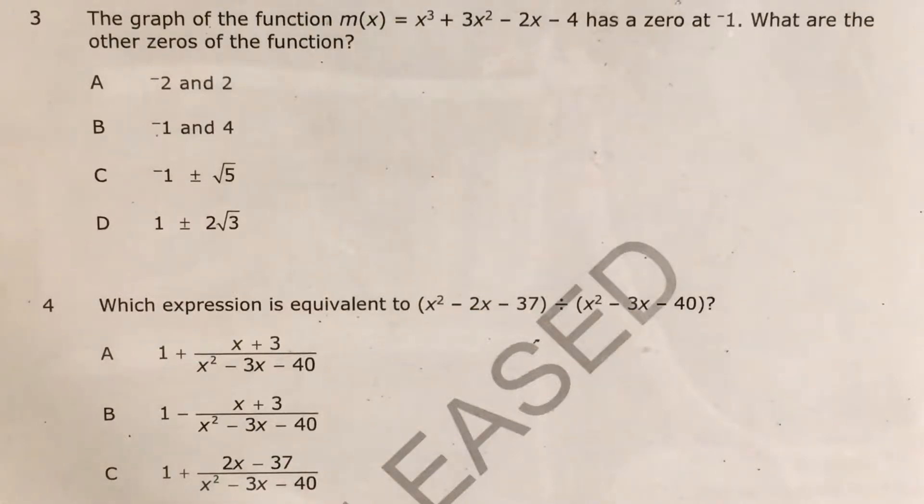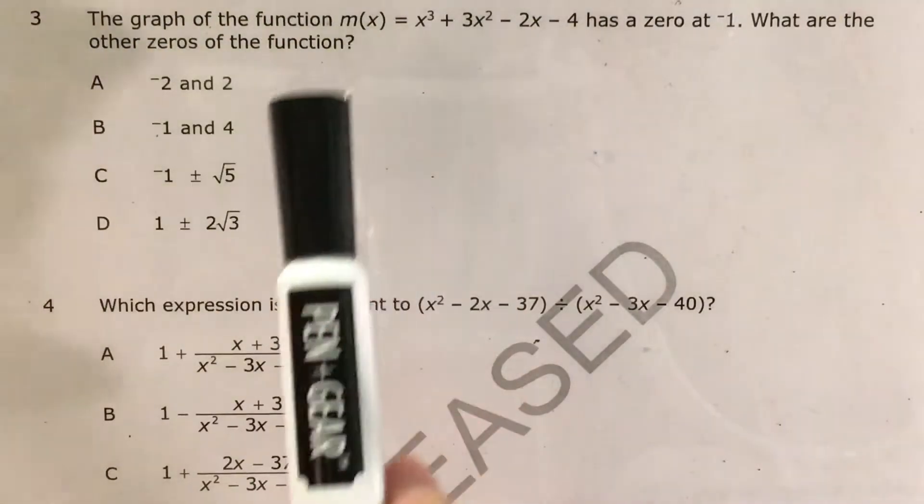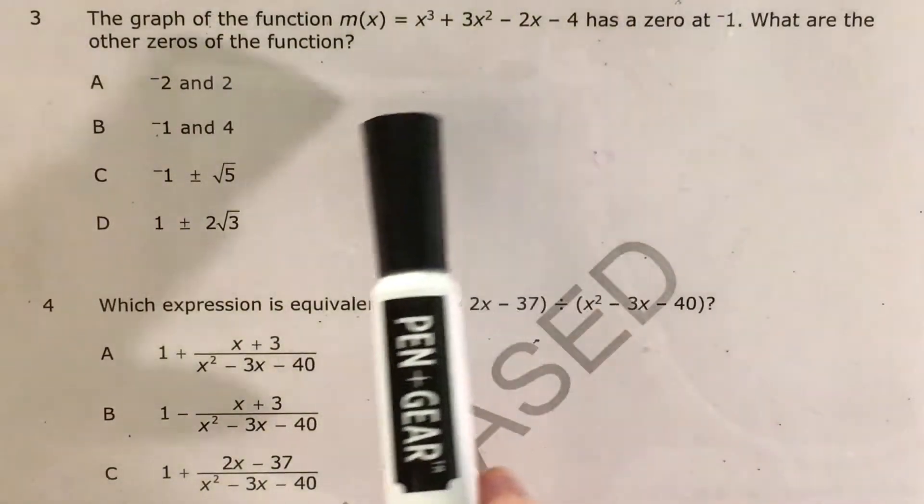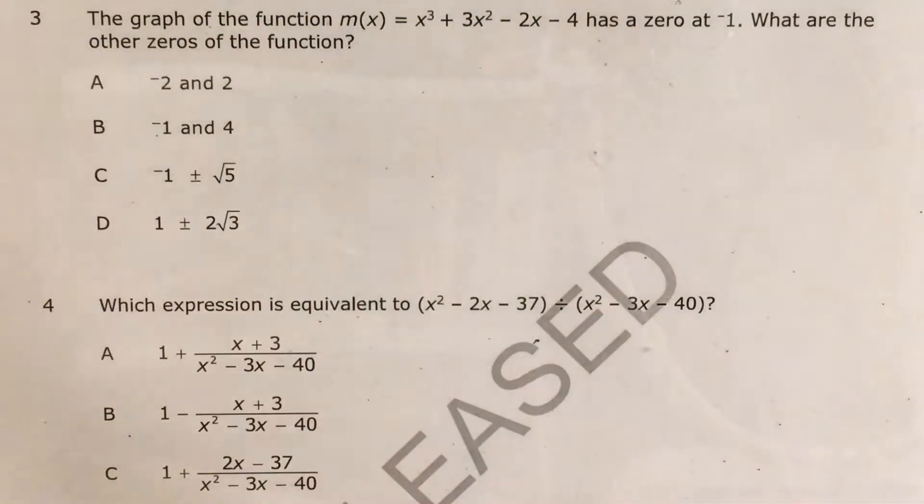What's up math scholars and math haters? This is Mr. W. Today we're going to tackle question three in the math three questions that North Carolina released this past school year. The question tells us that the graph of this function has a zero at negative one, and we're trying to find the other two zeros of the function.